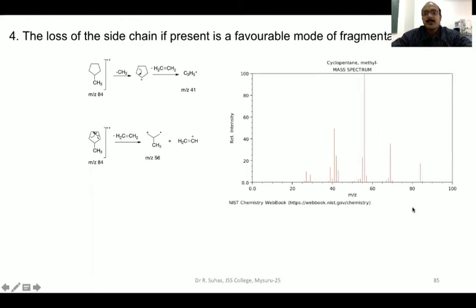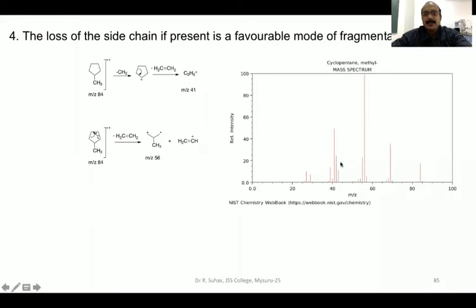This is the mass spectrum of 1-methylcyclopentane. You see a peak at m/z 84, which is the molecular ion peak. The peak at m/z 56 is the base peak due to charge stabilization, giving it very high abundance. The peak at m/z 41 is also observed. This is the mass spectrum of 1-methylcyclopentane.